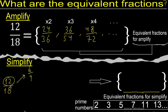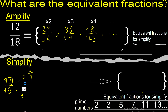12 and 18 can be divided by 3. 12 divided by 3 is 4. 18 divided by 3 is 6.